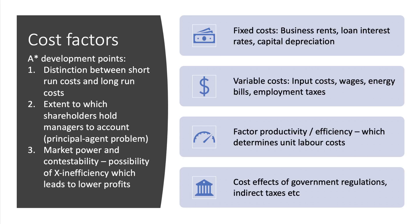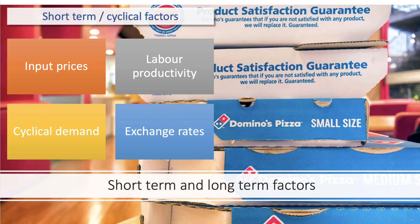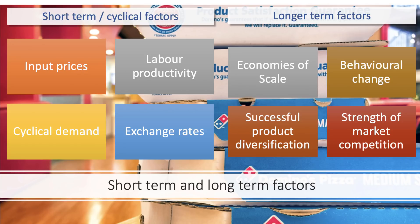For A-star development on costs, make a distinction between short-term and long-term cost factors. Think about the intensity of shareholder scrutiny - the extent to which shareholders hold managers to account - and bring in the principal-agent problem. Market power and contestability can also affect costs, particularly the possibility of X-inefficiency. In the short term, key factors include the cost of ingredients, workforce productivity, exchange rates affecting the price of imported materials, and short-term changes in the economic cycle.